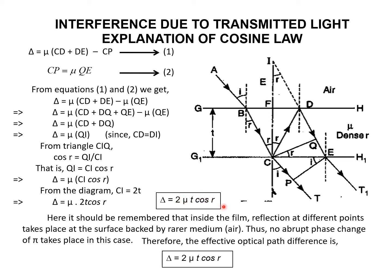We can derive the cosine law in the case of transmitted light from a thin film. It should be remembered that inside the film, reflections at different points take place at surfaces backed by the rarer medium, i.e., air. Since both reflections occur at surfaces backed by air (the rarer medium), there is no abrupt phase change of 180 degrees in this case from Stokes' law. Therefore, the effective path difference is simply delta equal to 2 mu T cos r.